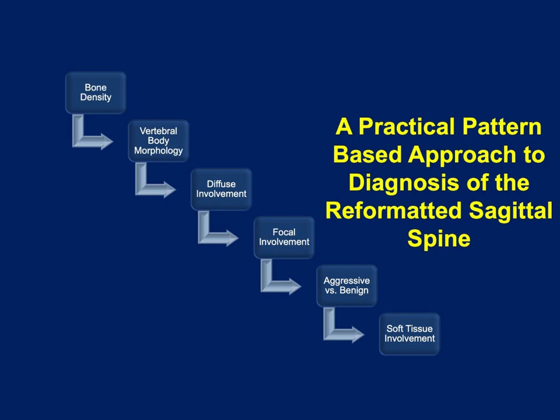When you think about a practical approach to looking at the sagittal spine, think about: bone density, vertebral body morphology and shape — you might be dealing with sickle cell disease or thalassemia — is it diffuse or focal involvement, is it L5 or L1 through L5, is the lesion aggressive or benign looking, and is there soft tissue involvement? Soft tissue involvement could mean infection, inflammatory processes, or malignancy like myeloma or plasmacytoma. The different appearances will put you on the right path.